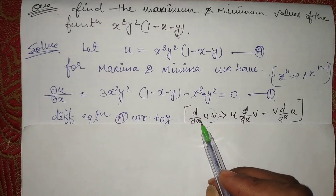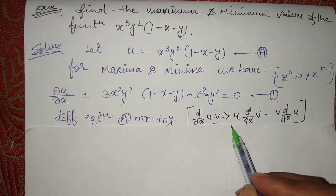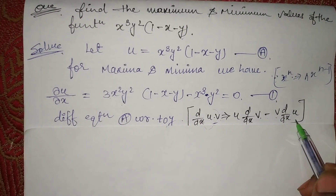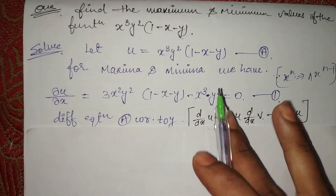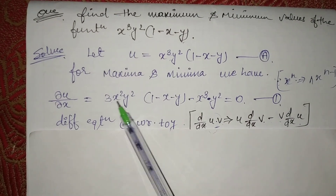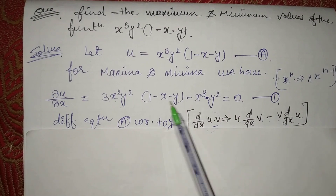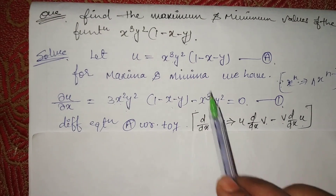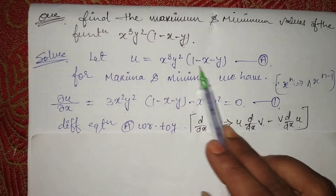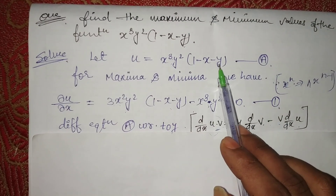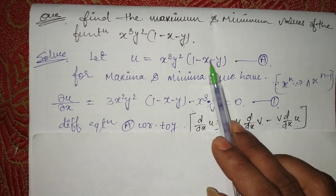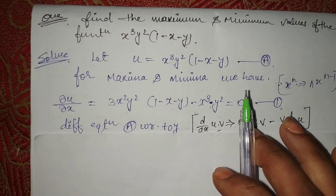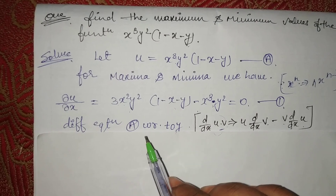Continuing the differentiation — the constant term stays as is. For the remaining terms, 1's differentiation and y's differentiation give zero, but x's differentiation gives 1. So we complete del u upon del x.